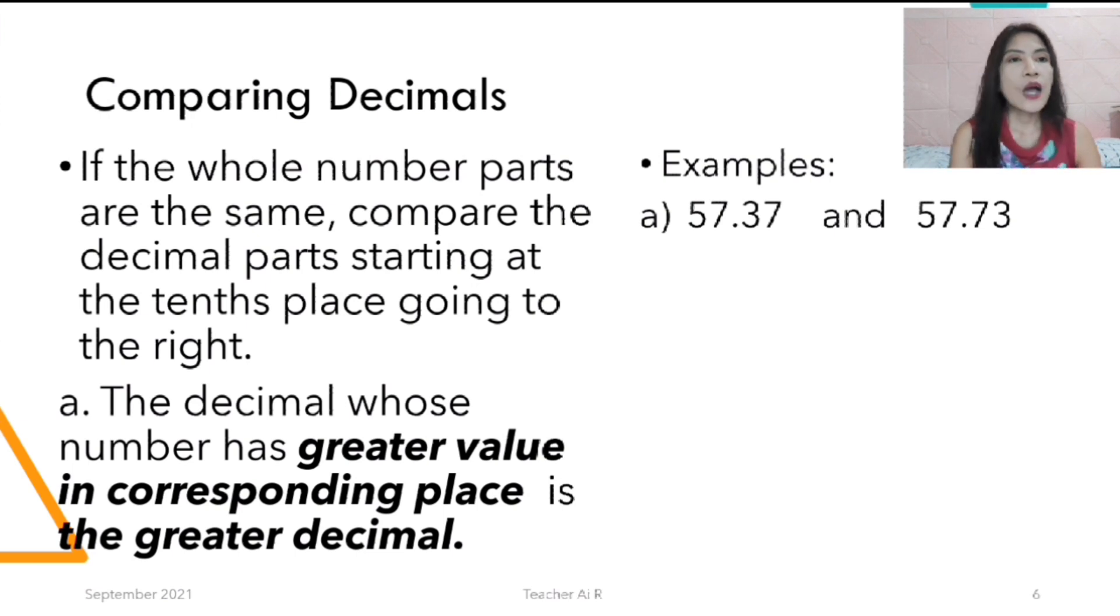How to do it? So, example we have here. We have the same 57, the whole number is the same 57 and 57. But the decimal is, the other one is 0.37 and the other one is 0.73. Which one is bigger, is it the 0.37 or the 0.73? The bigger one there is the 73. So when you compare it, 57.37 is less than 57.73.